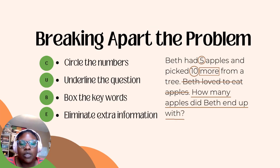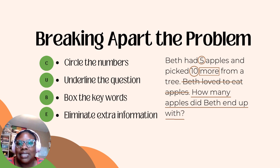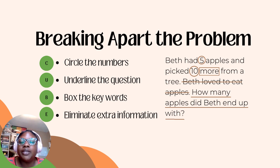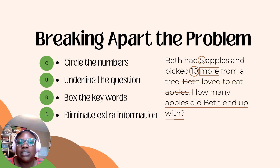For this word problem, we are going to use the CUBE method to break apart the problem. C stands for circle the numbers. U stands for underline the question. B stands for box the key words. And E stands for eliminate the extra information.